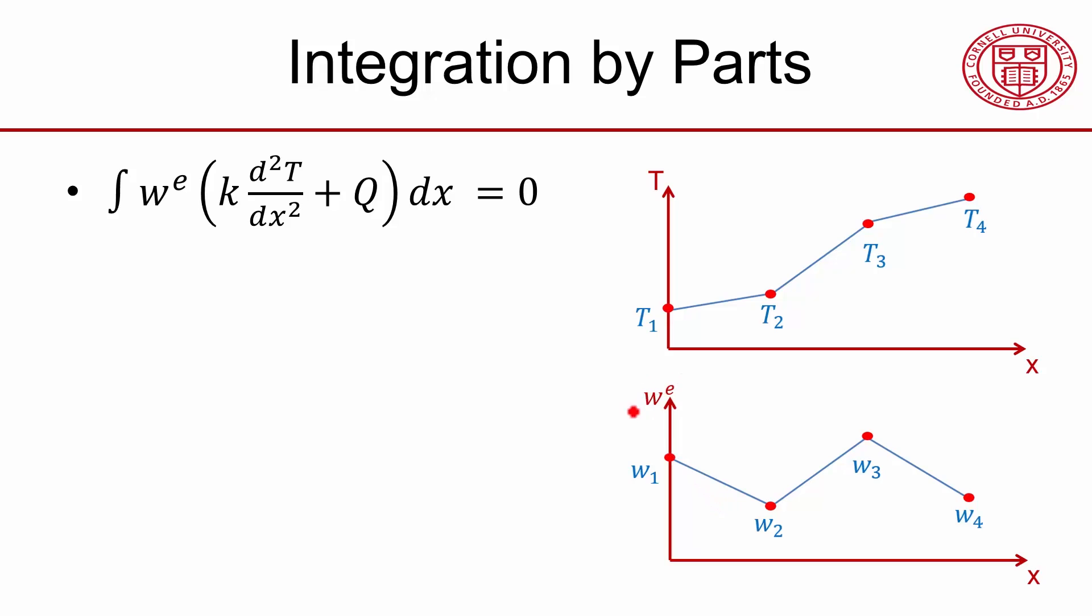And our weighting function is arbitrary, but we have reduced the arbitrariness of the weighting function to the arbitrariness of the values at the nodes. So we want to satisfy this for an arbitrary weighting function of this shape.